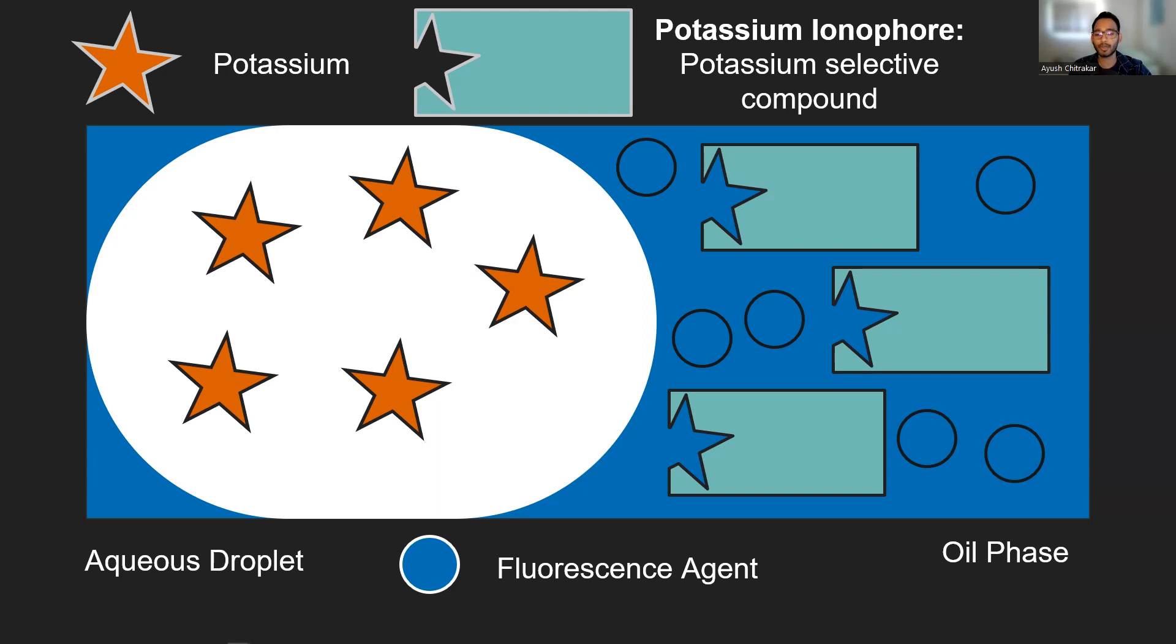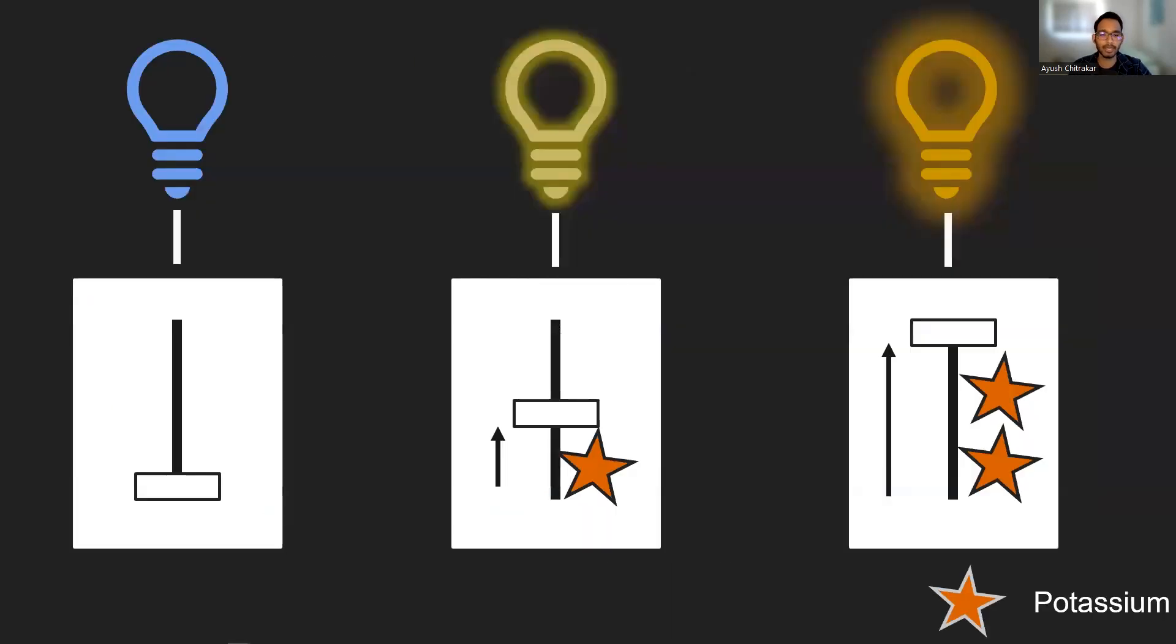So what does the fluorescent agent do? The fluorescent agent is like a light bulb attached to a dimmer switch. Depending on the amount of our analyte that is present in the oil phase, it can brighten or dim the light bulb. And then since we can measure the brightness of a light easily, we can use that to relate how much potassium is in our droplets.